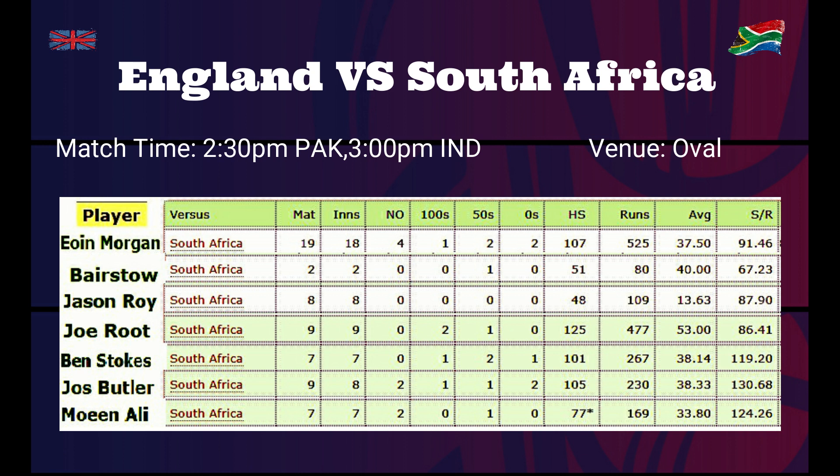Root has the best average against South Africa of 53, and his highest score was 125 against South Africa. Ben Stokes and Jos Buttler have an average of 38 runs against South Africa, and Moeen Ali has an average of 33 runs.